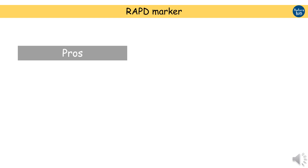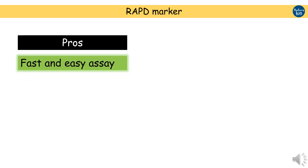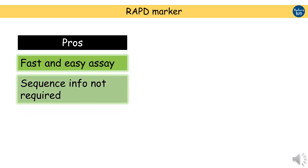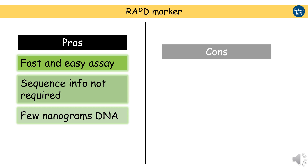The main advantages of RAPD markers are: first, the assay is very easy and fast — it can be completed within four to five hours. Second, no prior sequence information is required for primer designing. Third, the RAPD assay can be performed even with a few nanograms of DNA. However, there are a few disadvantages with RAPD markers too.